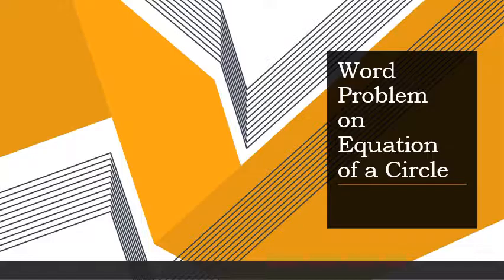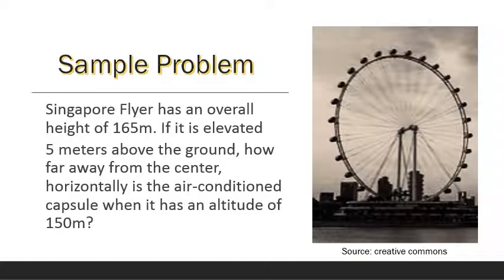Welcome once again for another video lesson about circles. Today we will be discussing one of the word problems on equation of a circle. Let us read the given sample problem: Singapore Flyer has an overall height of 165 meters. If it is elevated five meters above the ground, how far away from the center horizontally is the air-conditioned capsule when it has an altitude of 150 meters?